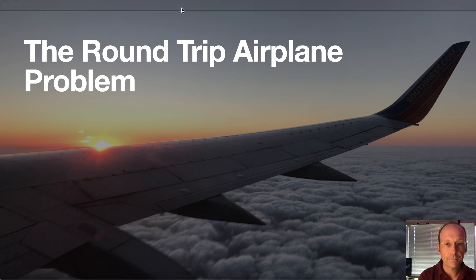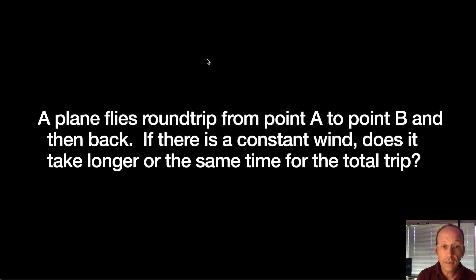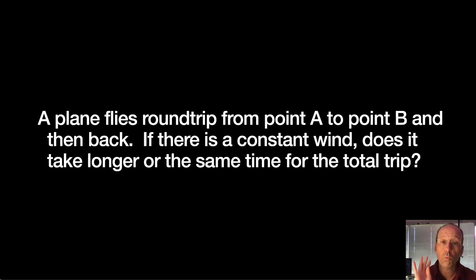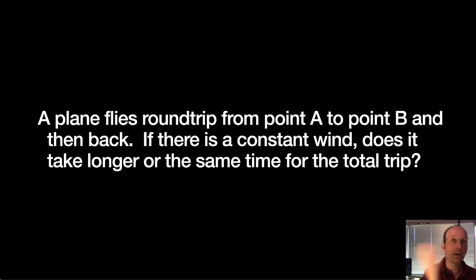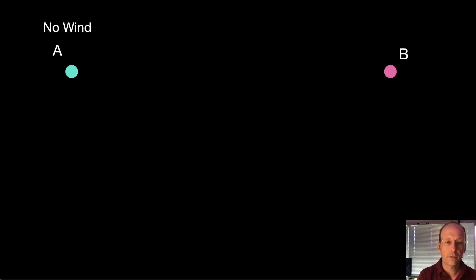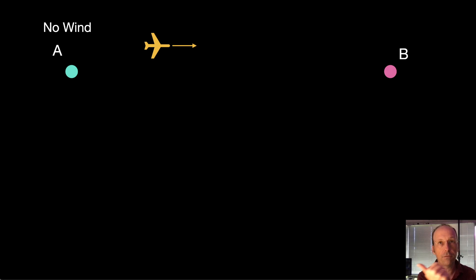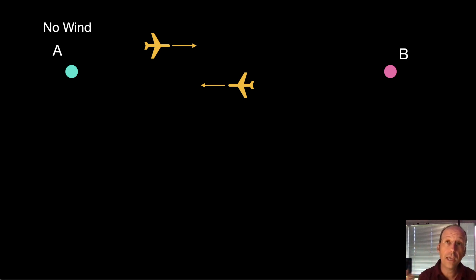Here's the problem. A plane flies round-trip from point A to point B and then back. If there is a constant wind in the same direction, does it take longer or the same amount of time for the total trip? Let me show you this as a picture. Here's point A and here's point B and there's no wind. If someone flies from A to B, they have some speed that way, there's no wind, and then they come back. So it takes some amount of time. Now we're going to take the same trip.